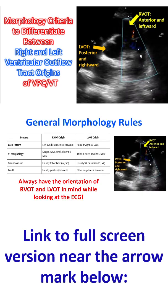We will have a look at general morphology rules, which are known to almost every student of cardiology. The basic pattern is left bundle branch block for RVOT origin, because of delayed activation of the left ventricle, as occurs in left bundle branch block. For LVOT origin, the pattern is RBBB or an atypical RBBB pattern.